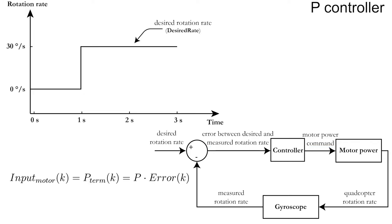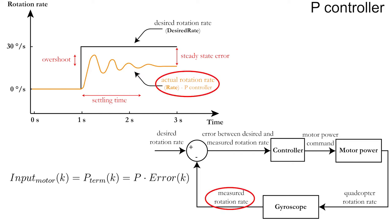Now let's suppose that you give the command to go from a rotation rate of 0 to 30 degrees per second after 1 second. How will the quadcopter respond in the case of a P controller? Well, the higher you choose the value for P to be, the faster the actual rotation rate approaches the desired rotation rate and the smaller the settling time, which is a good thing.